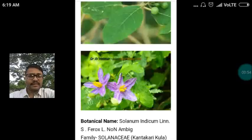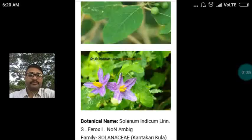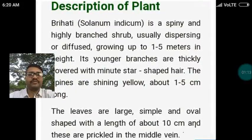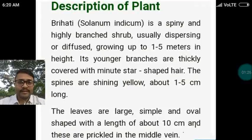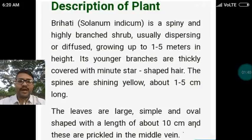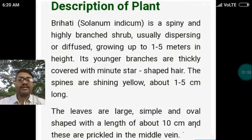Here you can see the Brihati flowers. The botanical name is Solanum indicum and the family is Solanaceae, which is Kantakari Kula. Brihati is a spiny and highly branched herb, easily diffused, growing up to 1 to 5 meters in height. Its younger branches are thickly covered with star-shaped hair. The spines are shining yellow, about 1 to 5 centimeters long. The leaves are large, simple, and oval, with a length of about 10 centimeters, and are prickled with thorns in the middle vein.